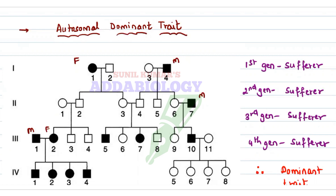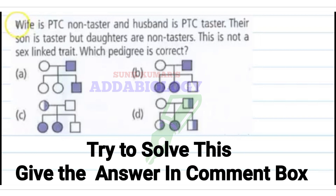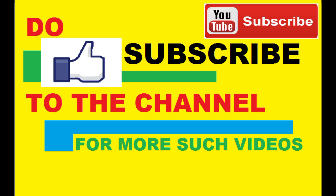We can conclude that PTC — phenyl thiocarbamide tasting — is a genetic disorder and an autosomal dominant trait. I hope students have understood the concept of PTC in genetics in an easy way. If you are new to the channel, don't forget to subscribe; if you liked the video, don't forget to give it a like. This is how you can learn the PTC genotype.